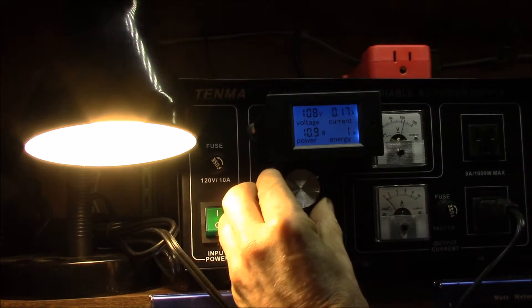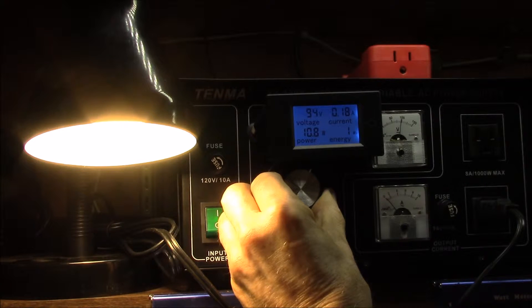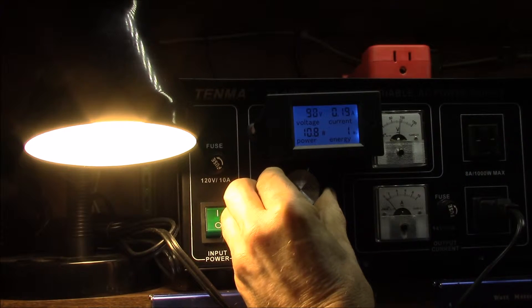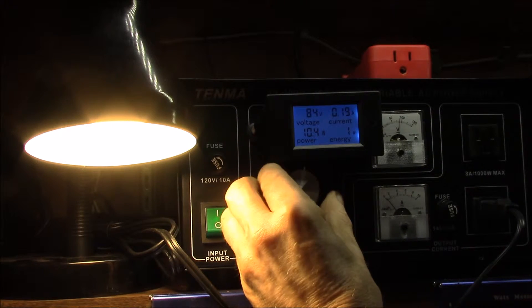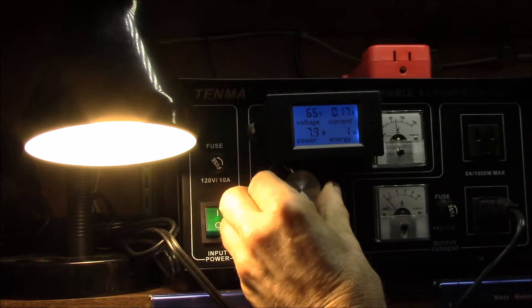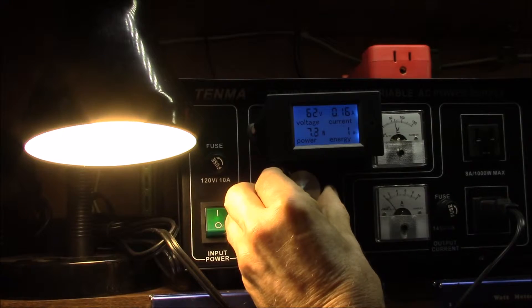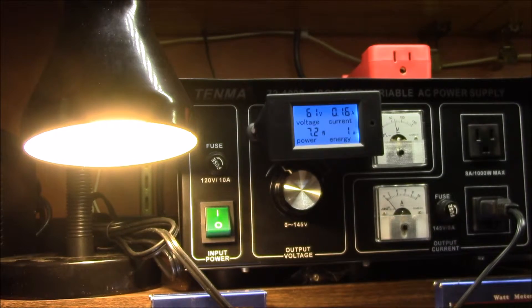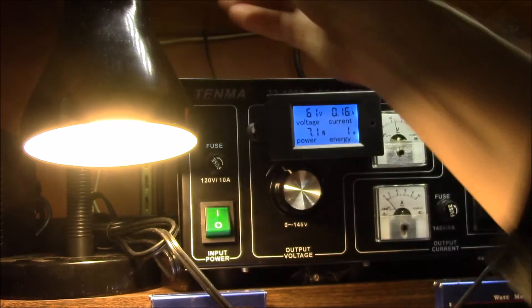You can see it's going up, up to 180, 190, kind of peaks out around there, and then starts to drop. And if I get down here to about 60, and note, around 60 volts, the bulb won't turn on. If I switch it off and back on, it won't come back on.